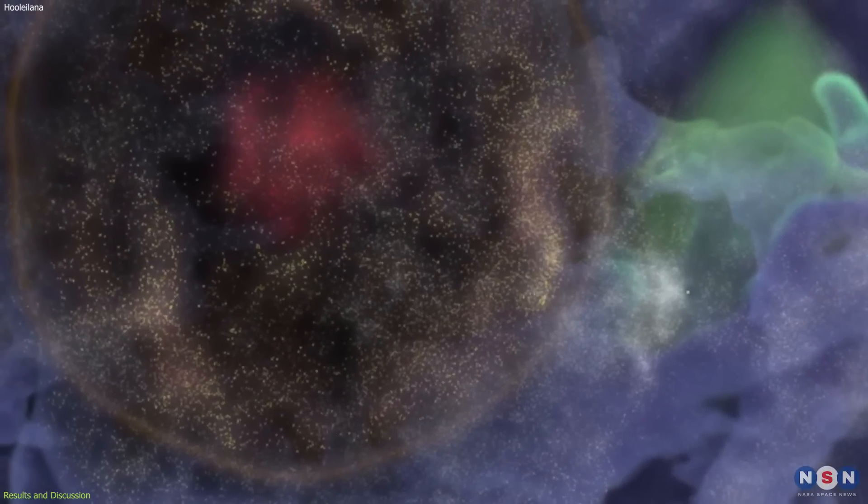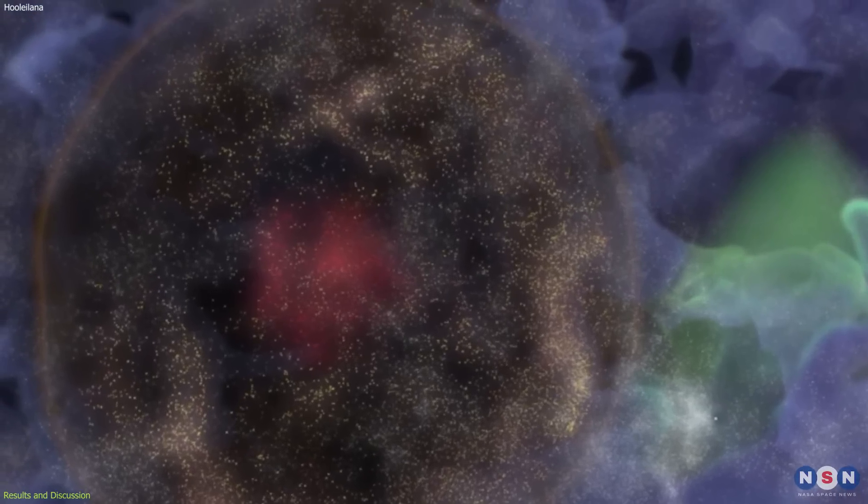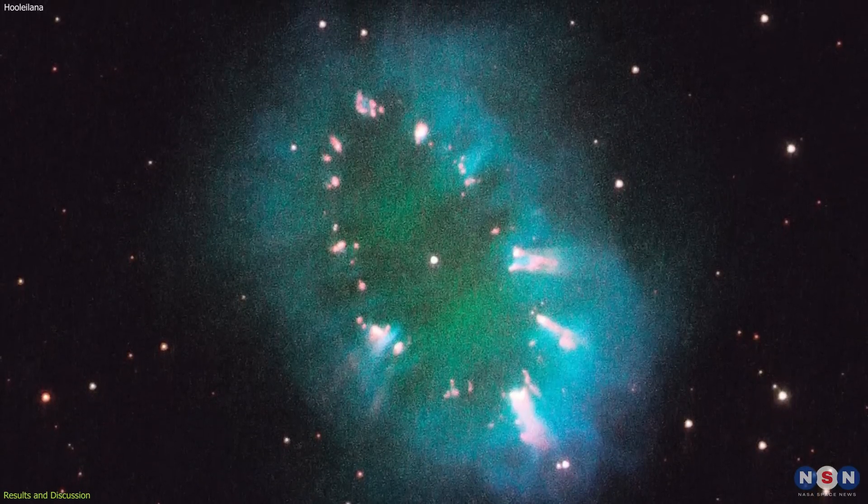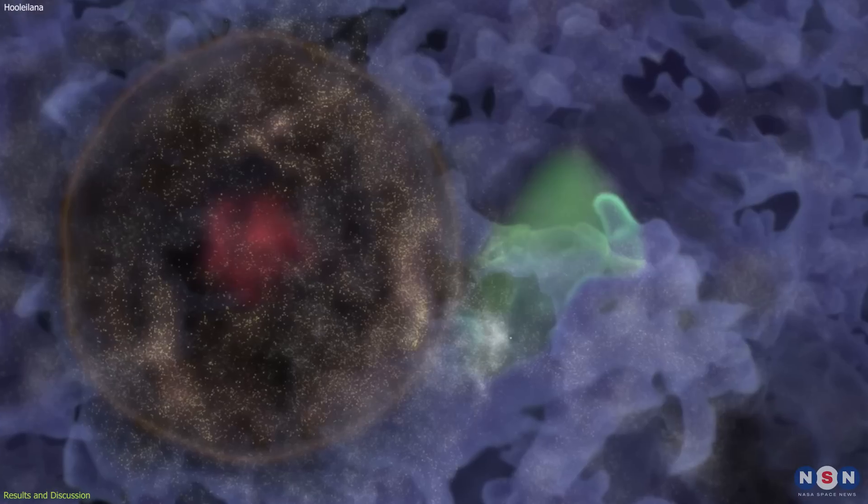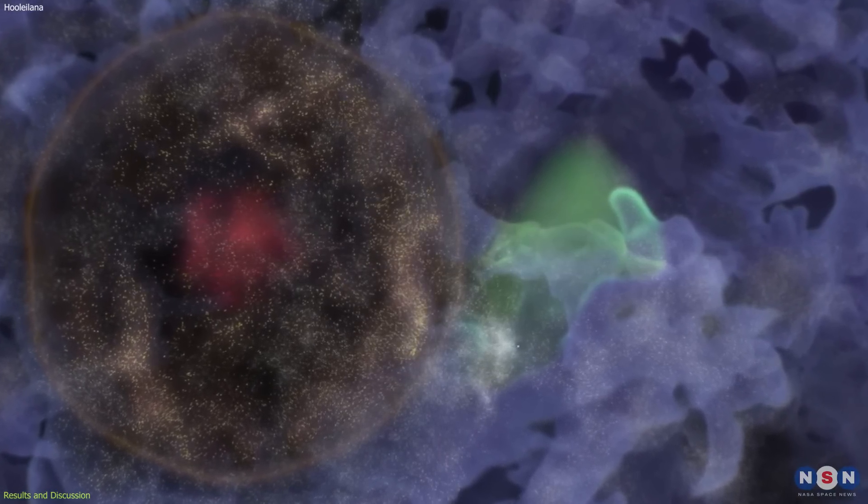However, these galaxies are not evenly distributed throughout the bubble. They are concentrated along its surface or boundary. This creates a shell-like structure that resembles a lei, or a necklace, made of stars. That's why the astronomers named it Hulelana, which means to make a lei of stars in Hawaiian.